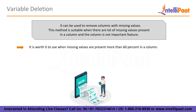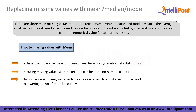Starting with variable deletion — missing values can be dealt with by deleting the columns with null values. If more than half of the rows in a column are null, the column can be dropped as it is not an important feature in that case. Whereas in replacing missing values with mean, median, and mode, there are three main missing value imputation techniques. Mean is the average of all values in a set. Median is the middle number in a set of numbers sorted by size. Mode is the most common numerical value. Columns with numeric continuous values can be replaced with the mean, median, or mode of the column's remaining values. Compared to variable deletion, this method can prevent data loss.